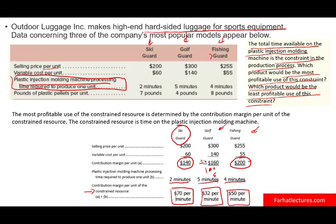The Golf Guard is the least profitable use of machine time. So the priority order is: first produce as many Ski Guards as you can and sell as many as possible, then produce Fishing Guards until you run out of resources, then produce Golf Guards — if plastic injection molding machine processing time is your constraint resource.